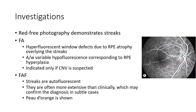Coming to the investigations done for a case of angioid streak: red-free photography can be done to demonstrate the angioid streaks. Fundus fluorescein angiography can also be done — it shows hyper-fluorescent window defects due to RPE atrophy overlying the streaks, and is also associated with variable hypofluorescence corresponding to RPE hyperplasia. Remember, fundus fluorescein angiography is indicated only if choroidal neovascularization is suspected.